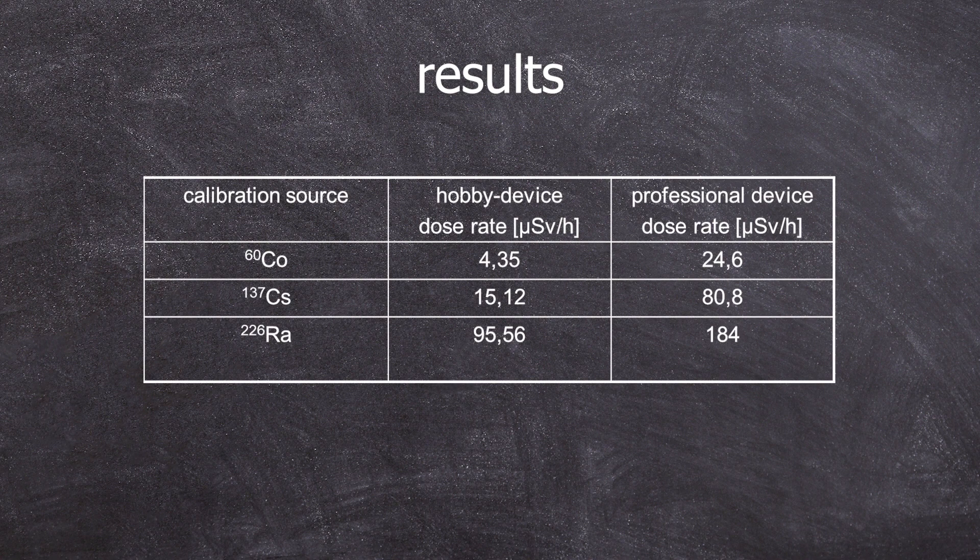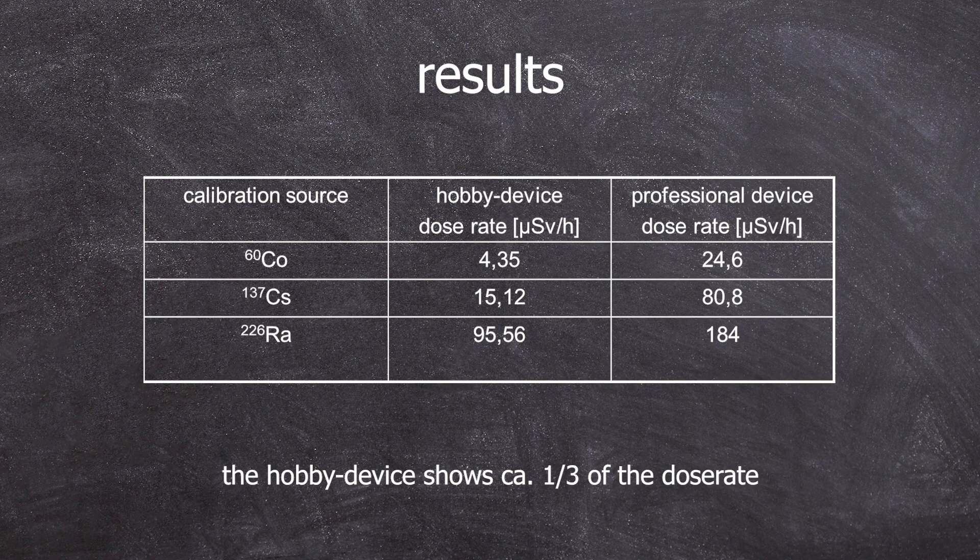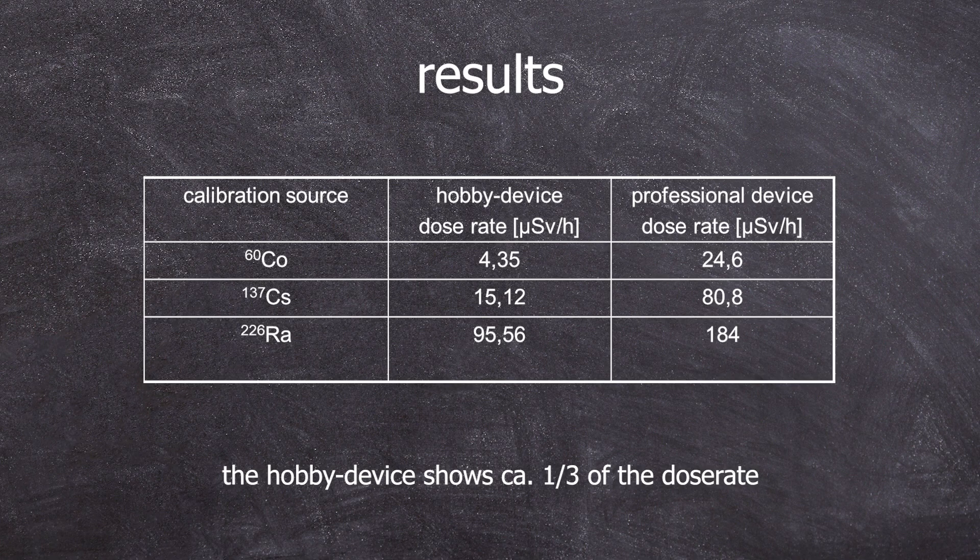If I calculate the average of the values, I can conclude that the hobbyist measurement device measures about one third compared to the professional one. This is quite important. The actual dose rate could be three to eight times higher than what it shows on the cheap device. Well, wait, summarizing it at one third is a bit too rough.